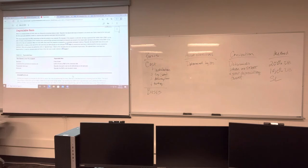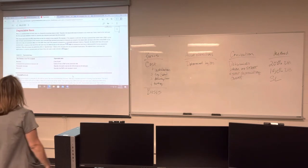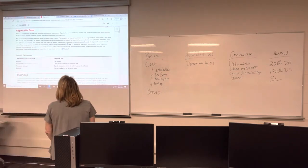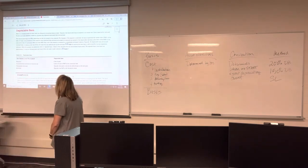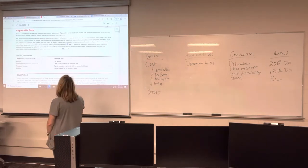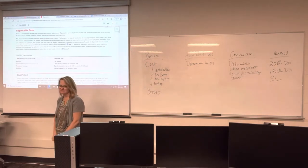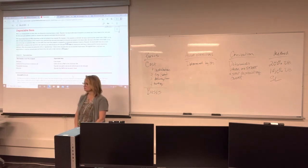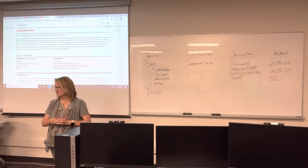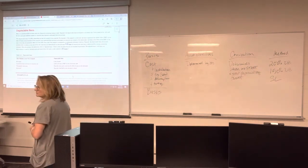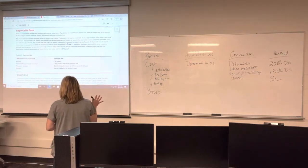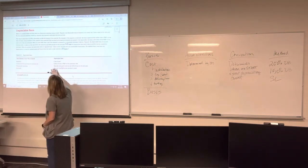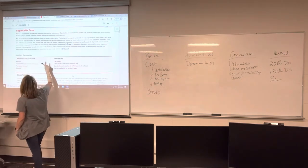Let's go through each component individually, starting with depreciable basis. We start with our cost — it's like book value in financial accounting. It can be different depending on how the property was acquired. If you purchased it, it's whatever you paid for it. But if someone gave it to you, you traded for it, or you inherited it, you'll have different costs. This table shows what basis to use because you need a starting number.